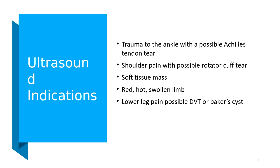We're also looking for soft tissue masses — anything in tissue surrounding organs. With a red hot swollen limb, they're probably going to order a DVT study first to rule out the most life-threatening condition. If it's not a DVT, it could be musculoskeletal related. For lower leg pain, we want to rule out DVT first, and if it's not that, it might actually be a Baker cyst.